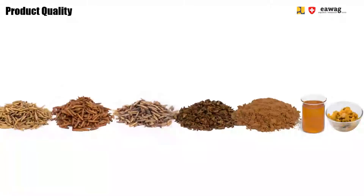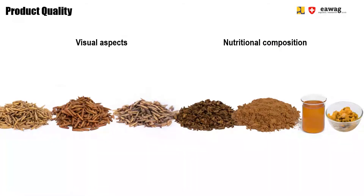Depending on which processing flow you choose, you will end up with different BSF products with different qualities. When we talk about quality in this learning course, we specifically focus on two aspects: the visual aspects and the nutritional composition. With visual aspects, we mean color, texture, and shape of the end product.